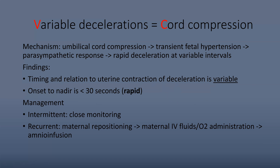If variable decelerations are intermittent, you can closely monitor. But when recurrent, start with maternal repositioning — specifically left lateral decubitus. You can then progress to resuscitative measures: IV fluids, oxygen administration, and similar measures. Amnioinfusion is often a third or fourth line treatment. If the cord is compressed due to decreased amniotic fluid and membranes are intact, you can inject amniotic fluid to re-volumize the amnion and relieve temporary cord compression. Ultimately, if this doesn't improve, progress to cesarean or vaginal delivery depending on dilation status.